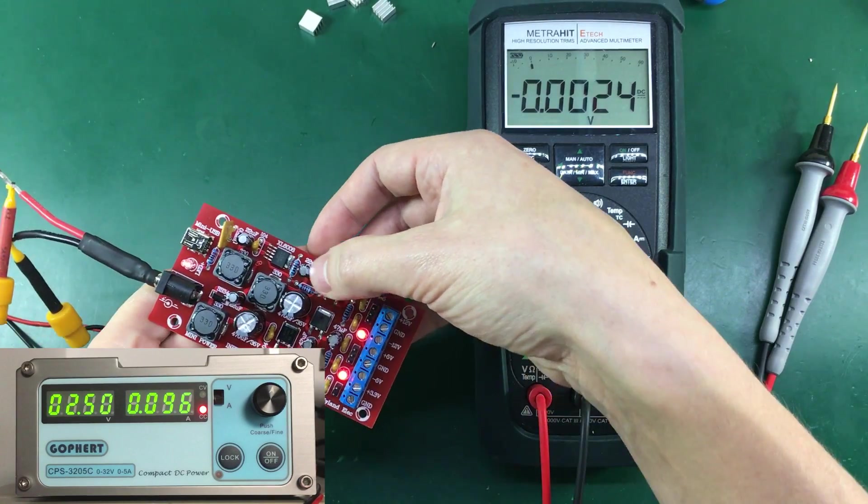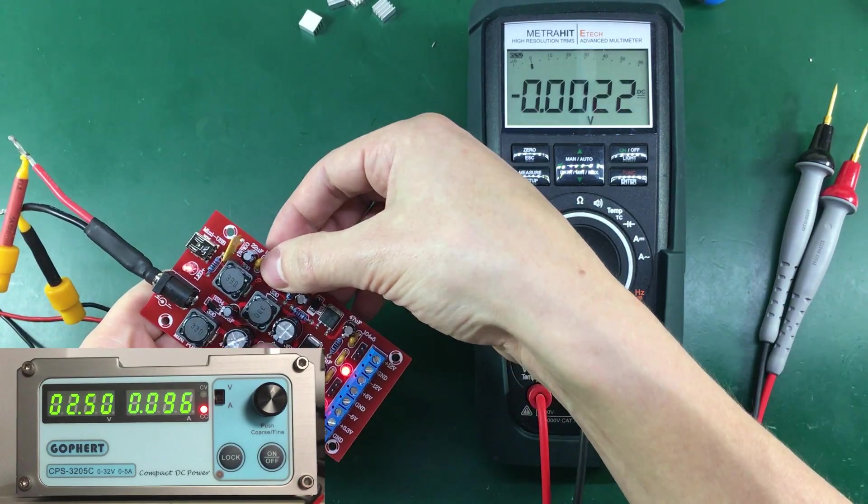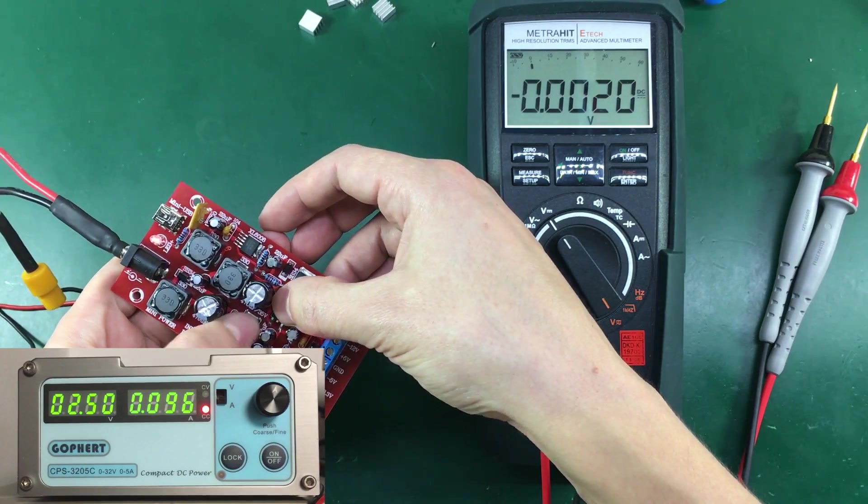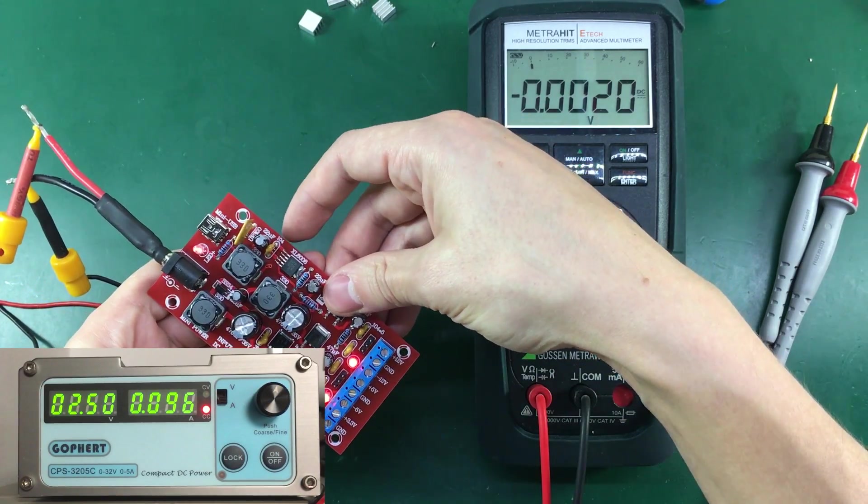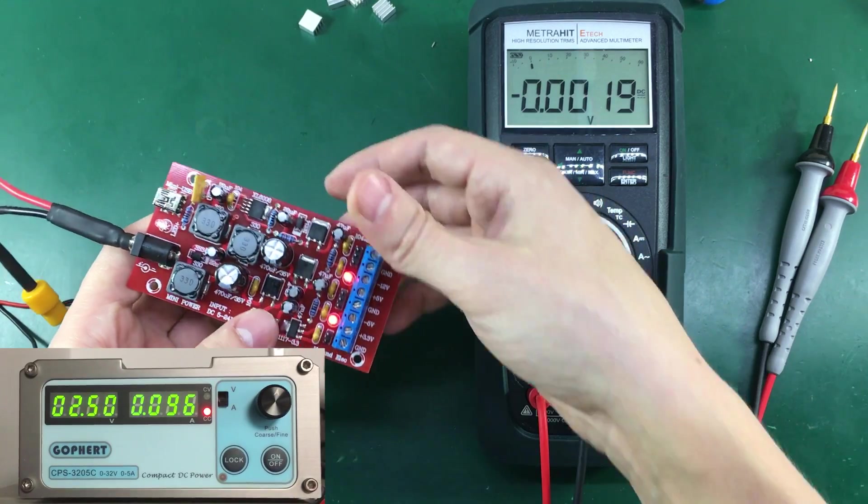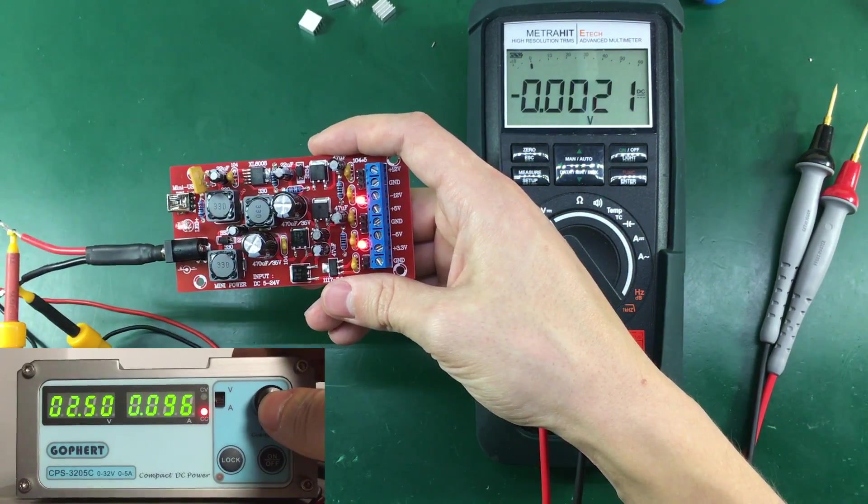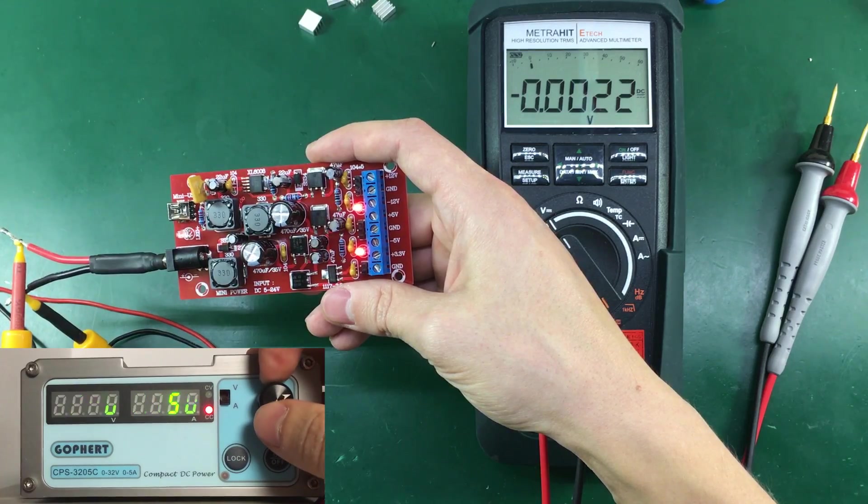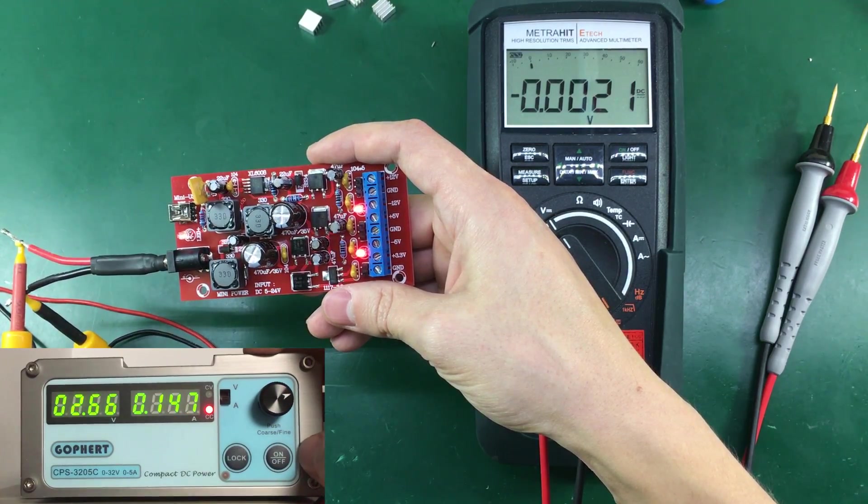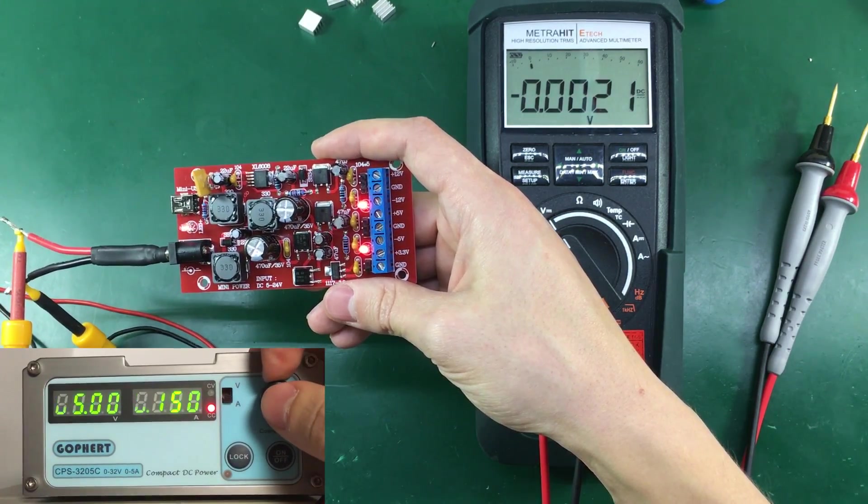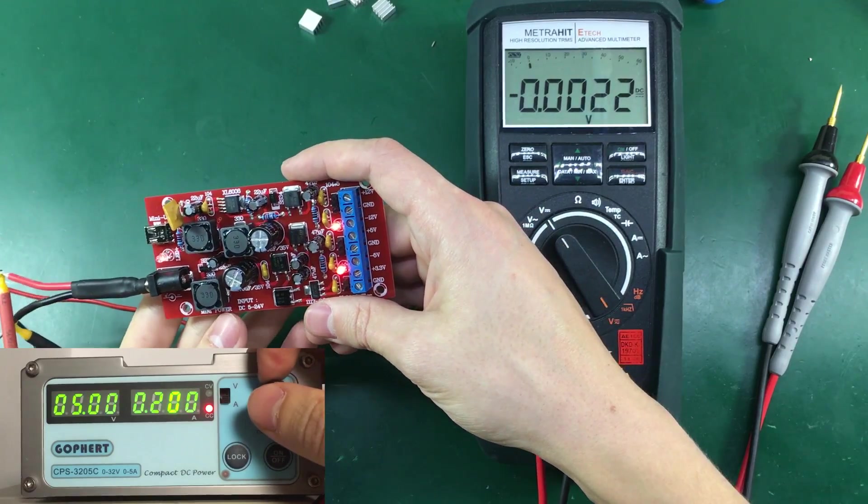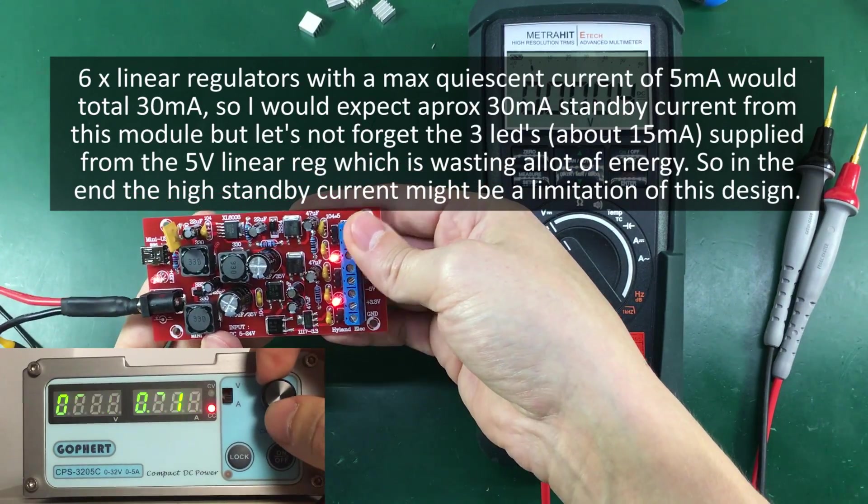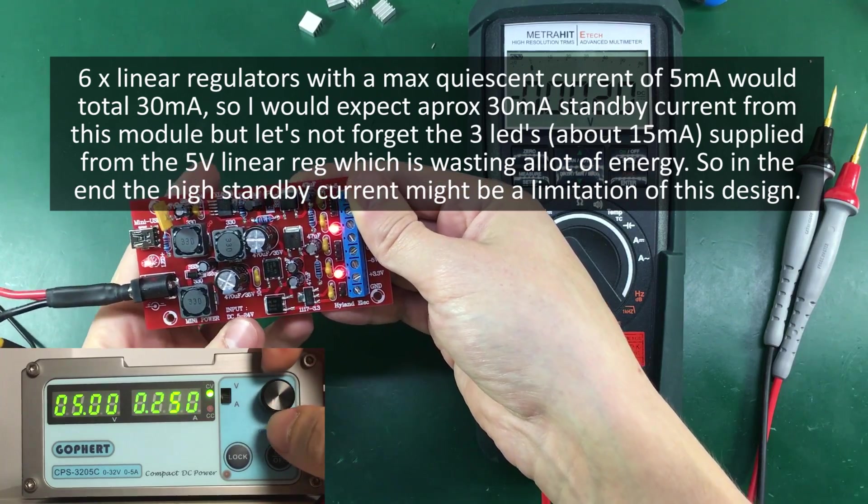Let's see if any of these regulators are getting hot. No they don't seem to be getting hot. Let's increase to 200 milliamps. Yeah and after going above 200 milliamps it went out of current limiting mode.